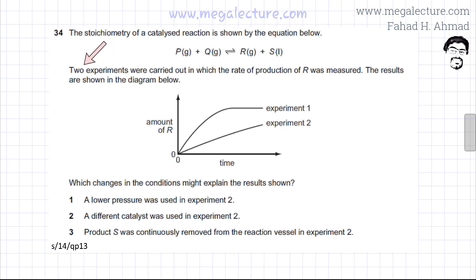The question states that two experiments were carried out in which the rate of production of R was measured. The results are shown in the diagram below. So this is the amount of R that is being produced. In the first experiment, R is being produced.